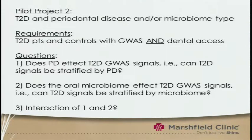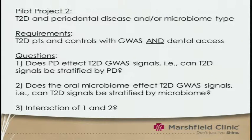Specifically, to identify diabetes patients and controls that already have genome-wide association studies and dental access. And basically what we'd like to know is if periodontal disease and/or the oral microbiome can actually stratify some of those genetic signals and whether we could be more predictive for type 2 diabetes susceptibility and outcomes.